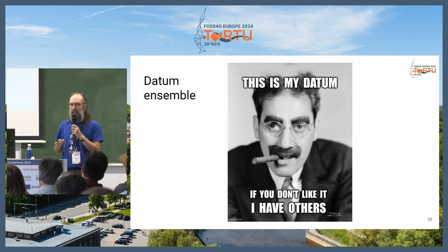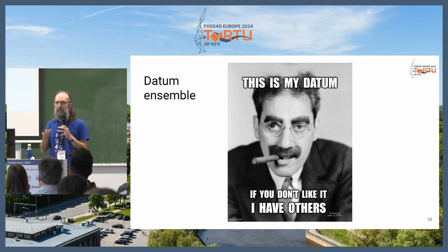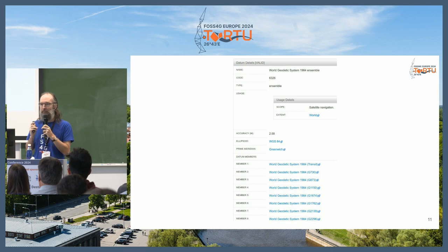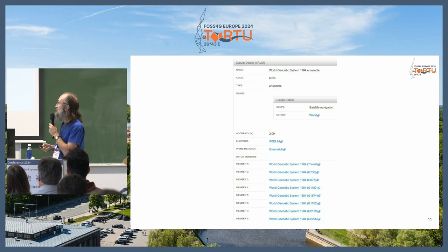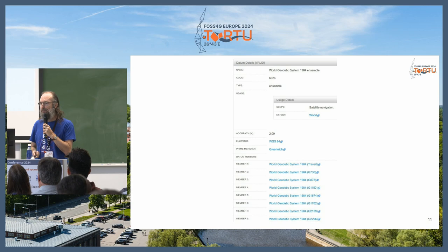4326 is defined with a datum ensemble. What's a datum ensemble? It's a set of datums. You can use all of them interchangeably — if you don't like one, you can use another. They are supposed to be the same when computing things. That, for me, is chaotic, but that's how it is. This is the definition in the EPSG webpage, EPSG.org. You can see the datum ensemble with all eight members. A few months ago there were only seven, and in a few years there will be nine. The ellipsoid is also called WGS84.